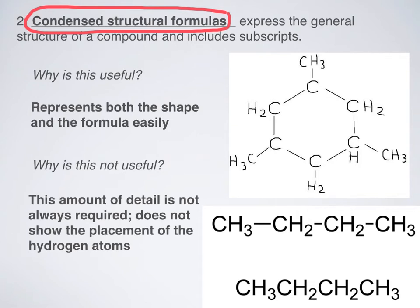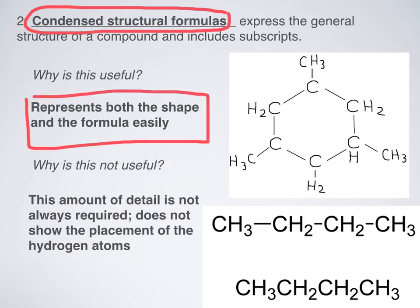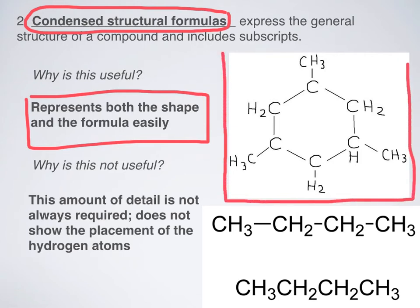Why is it useful? It represents both the shape and the formula easily. In this picture — which is the one I want you to draw in your box — I could find the chemical formula by just counting all of the carbons. So I have 1, 2, 3, 4, 5, 6, 7, 8, 9 — I have 9 carbons, so that would be C9. Then all I'd have to do next is count my hydrogens.